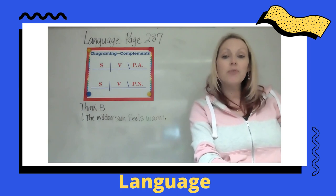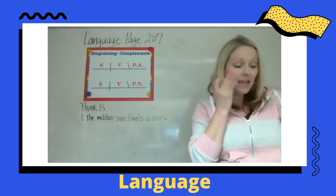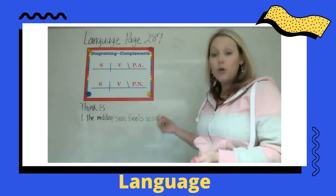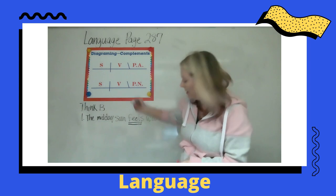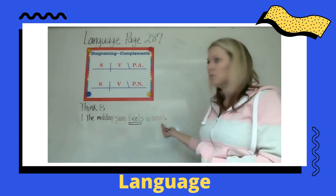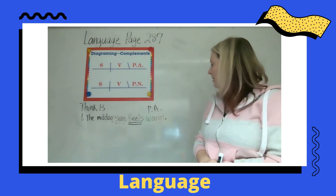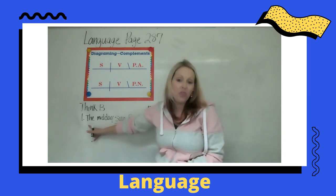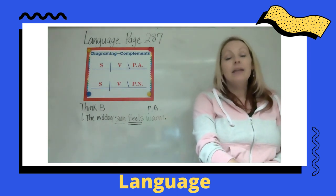All of these will contain either a predicate nominative or a predicate adjective. Number one says: 'The midday sun feels warm.' What is the verb? Feels — double underline. What is our subject? The sun. How does it feel? It feels warm — so warm is our predicate adjective because it's describing. We also have 'midday' and 'the' as adjectives for sun.